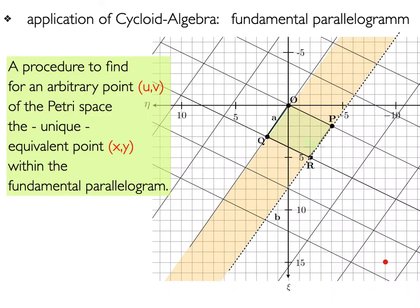We now give another application of cycloid algebra, a procedure to find for an arbitrary point u, v like here, of the Petri space, the unique equivalent point x, y, within the fundamental parallelogram.